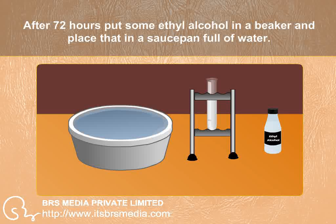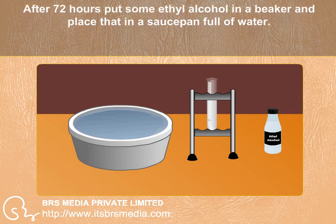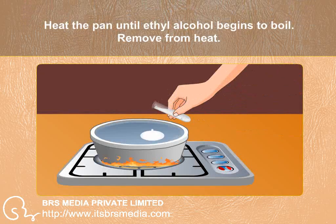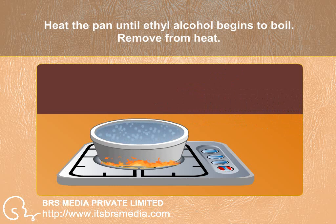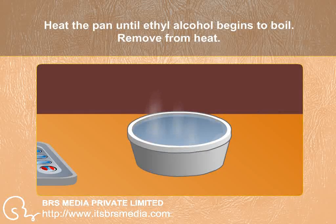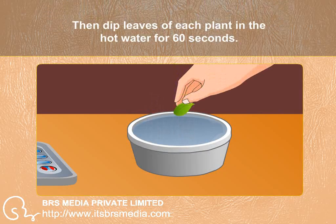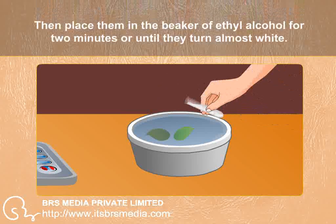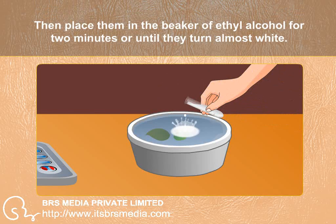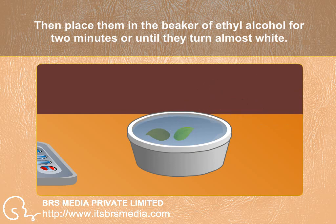put some ethyl alcohol in a beaker and place that in a saucepan full of water. Heat the pan until ethyl alcohol begins to boil. Remove from heat. Then dip leaves of each plant in the hot water for 60 seconds. Then place them in the beaker of ethyl alcohol for 2 minutes or until they turn almost white.